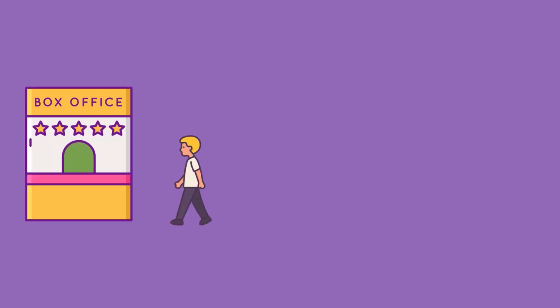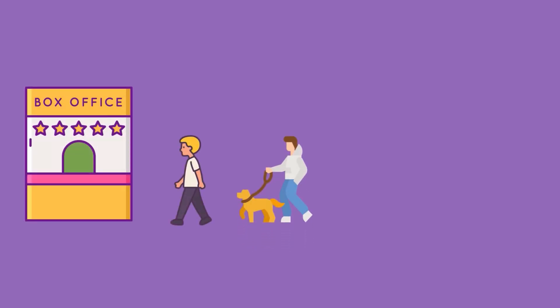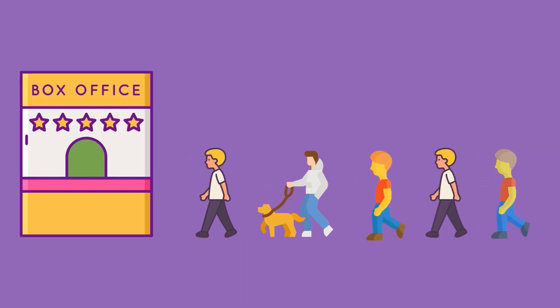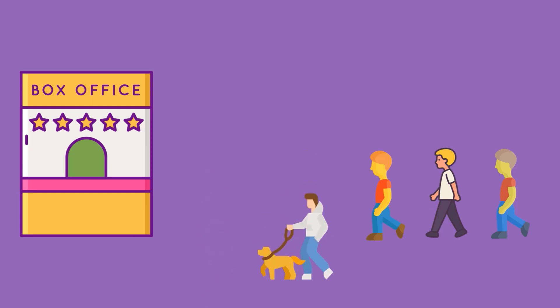Now let's take a real-time example where a queue works. Think about the situation of collecting movie tickets at the box office, where there is a queue of five people. Each person leaves the queue after taking the ticket, one after the other.